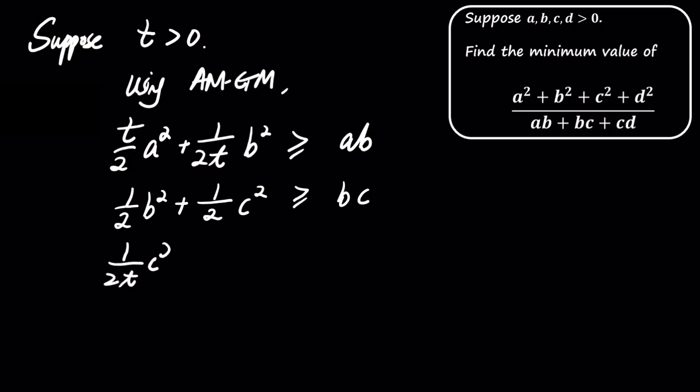t over 2 times c squared plus 1 over 2t times d squared is greater than or equal to cd. Now, adding these three inequalities together, we obtain...